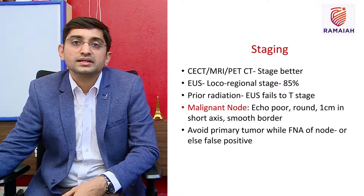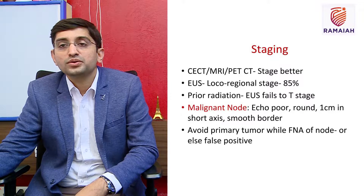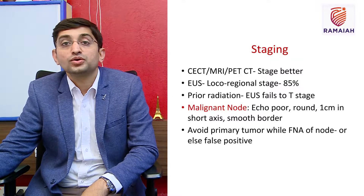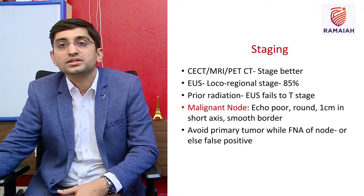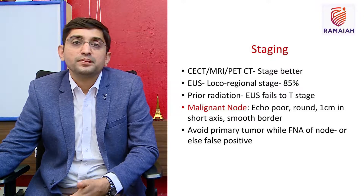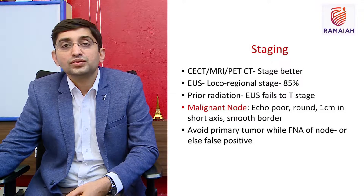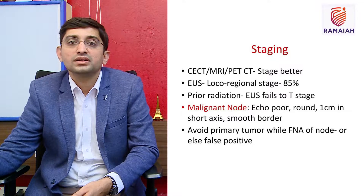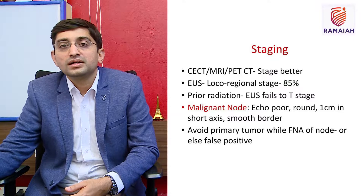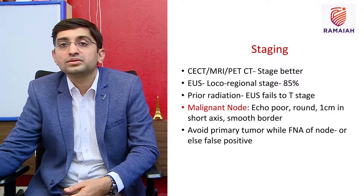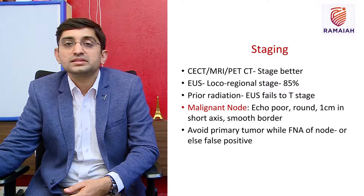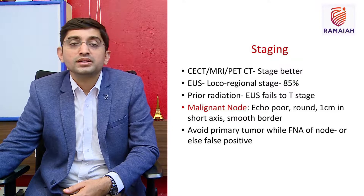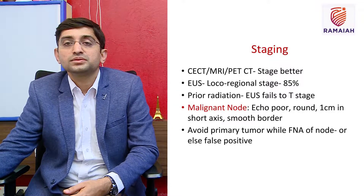For overall staging we use CT, MRI, or PET-CT, but EUS is much better for local regional staging, achieving accuracy in around 85% of scenarios. Whenever prior radiation has been used, EUS fails to determine the T stage of a tumor because radiation makes the wall layers confluent, and we cannot delineate the mucosa, submucosa, muscularis propria, serosa, or adventitia.